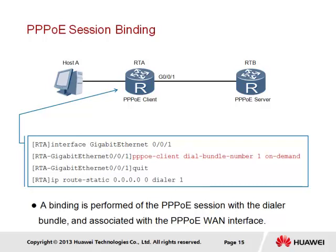This may represent a secondary connection backing up a primary connection used to route traffic. Should the primary route fail, the PPPoE session would establish to prevent downtime to external resources. The backup route is provided using the IP route static command, with a last-resort address of 0.0.0.0/0 representing any network, applying when no other longest-matched route is found. In such cases, traffic is forwarded to Dialer 1, which is bound to interface GigabitEthernet 0/0/1.